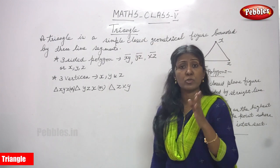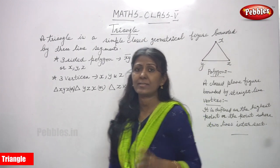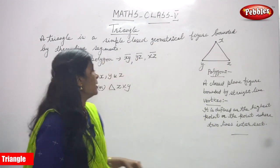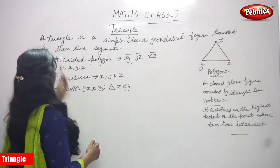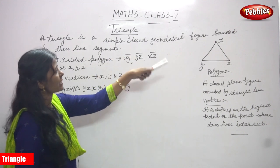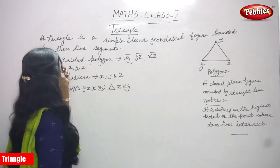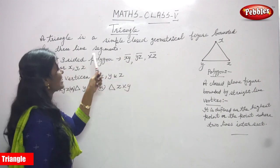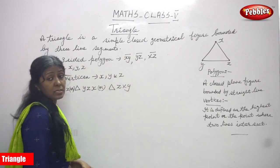First, what is a triangle? We must know about it. A triangle is a simple closed geometrical figure bounded by three line segments.